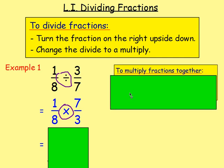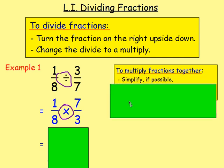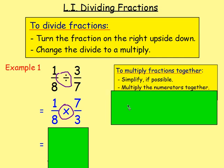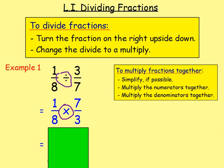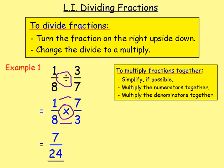To multiply fractions together, what's the first thing you always look to see if you can do? Simplify! Look to see if you can simplify — if you can do that first, it makes the question easier. After that, multiply the numerators, and multiply the denominators. So with this question, we've got 1 times 7 which is 7, and 8 times 3 which is 24. So the answer is 7 twenty-fourths.